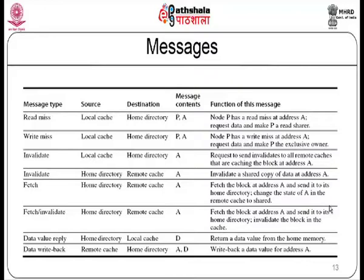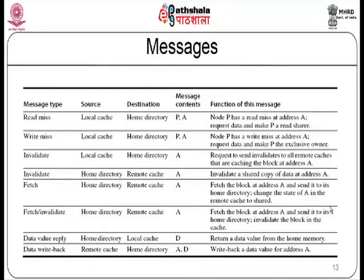For a read miss, the local cache sends a message to the home directory in the format (P, A) — processor P has a read miss on address A. It requests data and P must be made a read sharer, added to the sharers list. For a write miss, the local node sends a write request to the home directory in the same format (P, A) — node P has a write miss at address A, requesting data with exclusive ownership since it is writing.